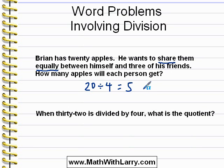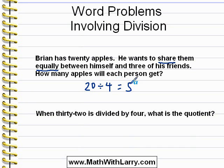We could get this either by knowing our multiplication and division facts, or we could use a multiplication table and ask ourselves: four times what number will give us 20? And we can see from that that the answer is five.